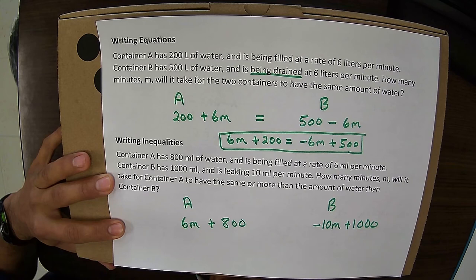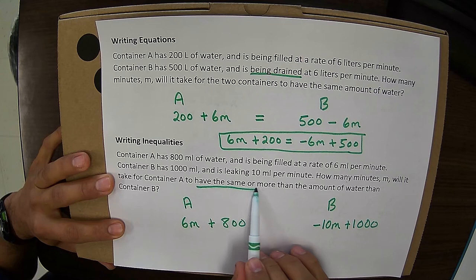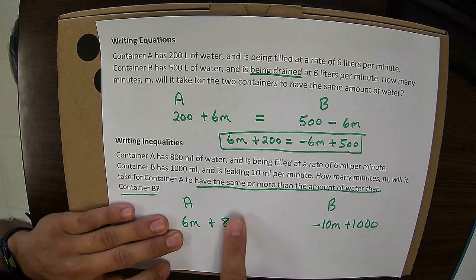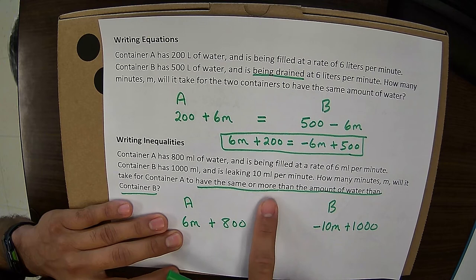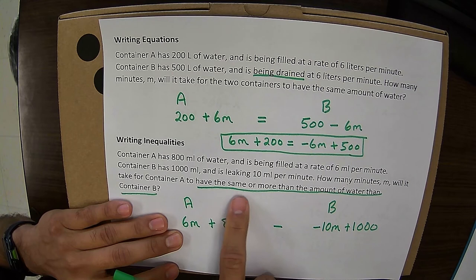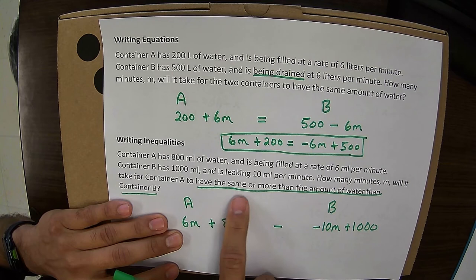So we're looking for how many minutes it will take for container A to have the same or more than the amount than container B. So we want container A to have the same or more than. So that tells us it's going to be a less than or greater than or equal to. And it's going to have the same or more than container B. So that means container A is going to have a greater value or a greater amount of water. So our inequality sign would look like that.